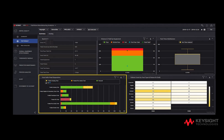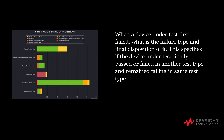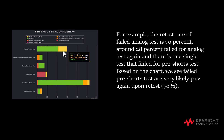The next part displays a breakdown of first fails and final disposition. Meaning, when a device under test first failed, what is the failure type and final disposition? This specifies if the device under test finally passed, failed in another test type, or remained failing in the same test type. The histogram displays the list of first fail test types. When we mouse over each point, we see the final disposition of each test type. For example, the retest rate of failed analog test is 70%; around 28% failed for analog test again, and there is one single test that failed for pre-shorts. Based on the chart, we see failed pre-shorts tests are very likely to pass again upon retest — 70%.